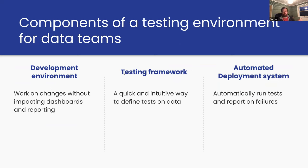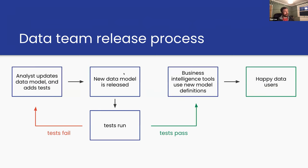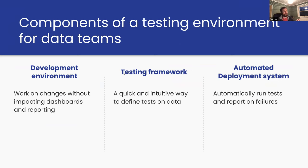To adopt this way of working, data teams need a few things. First, a development environment — that testing loop needs to be isolated from production. If running tests changes the data in dashboards and reporting, you haven't solved the problem. Second, a testing framework — a quick and intuitive way to define tests on data. Third, a system that automatically runs those tests and reports failures. Having these three components together allows a data team to follow software engineers and run a continuous integration process to keep data quality high.